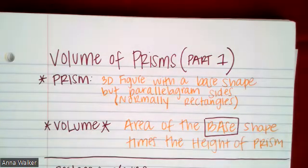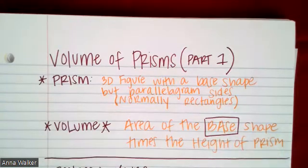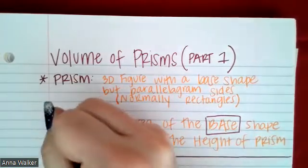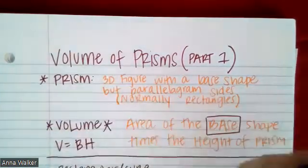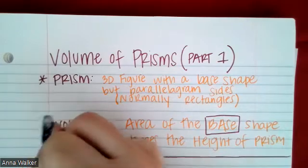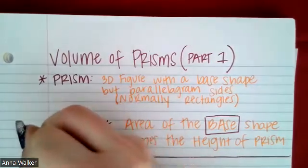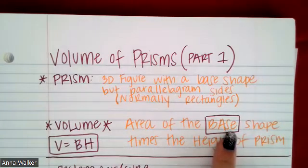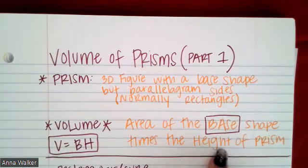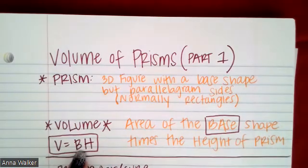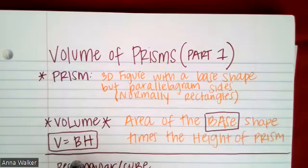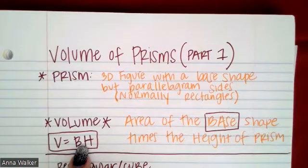On your formula sheets, the volume of a prism is written as capital B times capital H. They use capital letters specifically because capital B means the area of the base shape, and capital H means the height of the prism — not the lowercase b and h we've used with triangles and trapezoids. This specifically refers to the base shape and how tall the prism is.